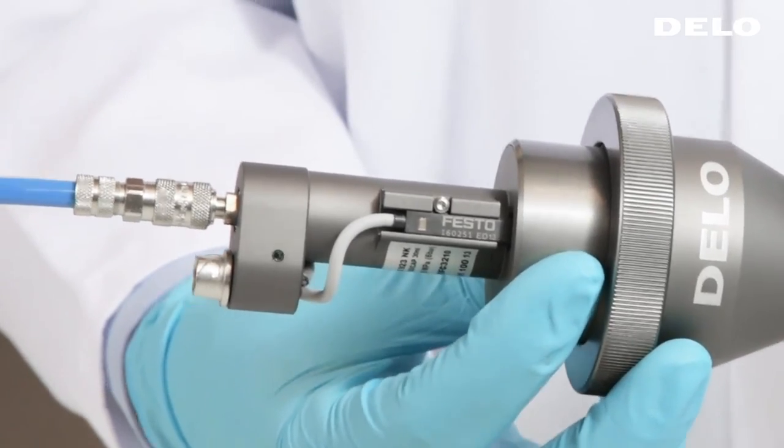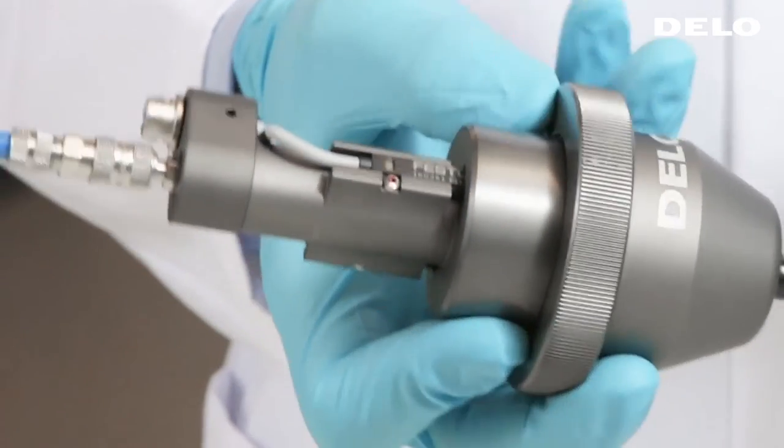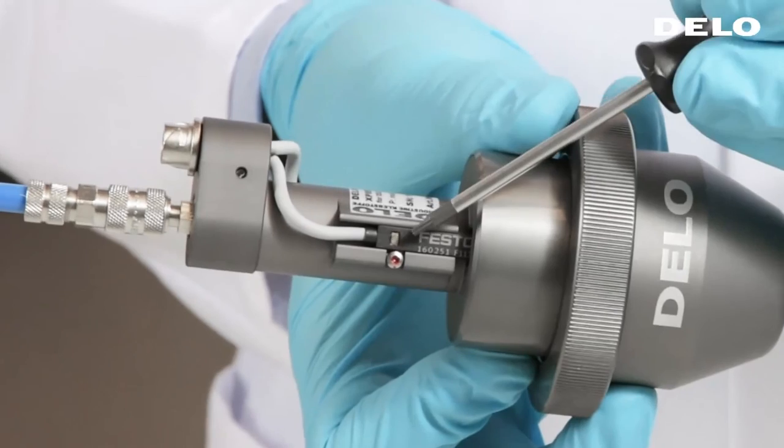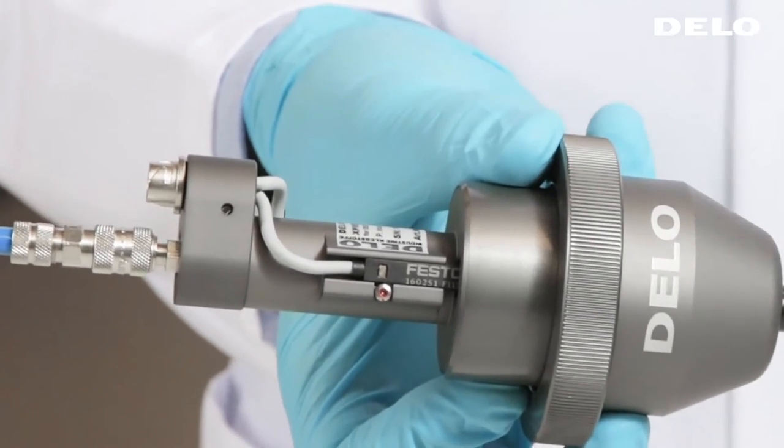For example, you can start preparing a new cartridge while the other one is still in use. The other signal is given when the cartridge is completely empty.